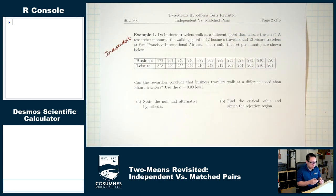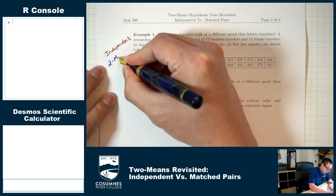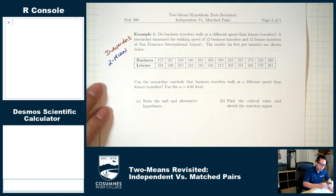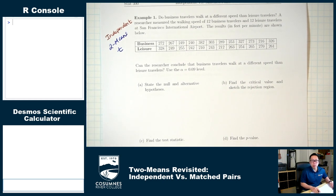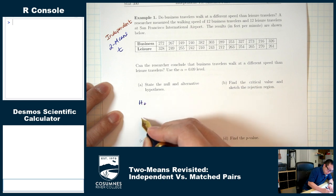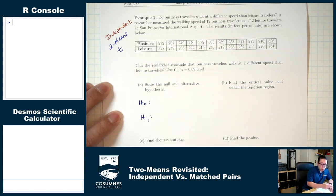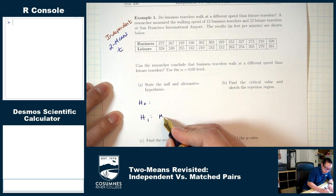For independent situations, we run this as a two-mean question. For means, we should be using T throughout the problem. Part A: state the null and alternative hypotheses. We're talking about two means, so we should be using the symbol mu — mu1 and mu2.